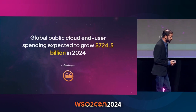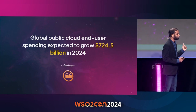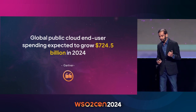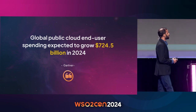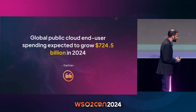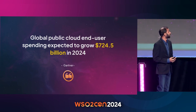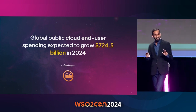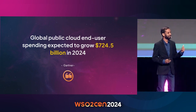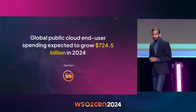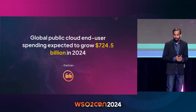Some numbers — just to convey the scale of this. This is something Gartner published mid last year. They expect by the end of year 2024 — by the end of this year — the global expenditure on the cloud native market, including cloud infrastructure as well as cloud services, to reach around $725 billion. This was around $600 billion at the end of last year. So the consumption of cloud services and cloud infrastructure has proliferated.